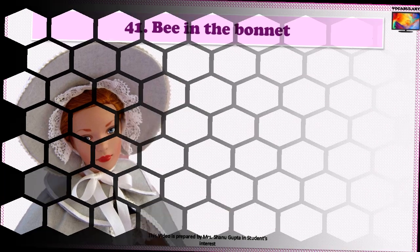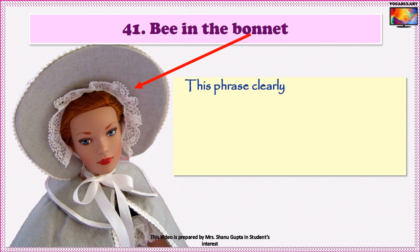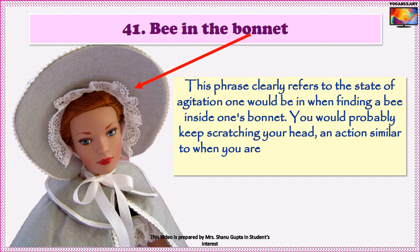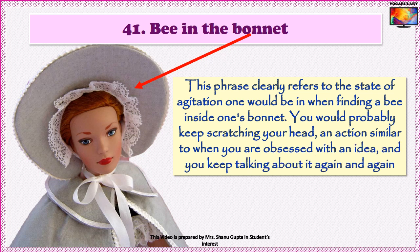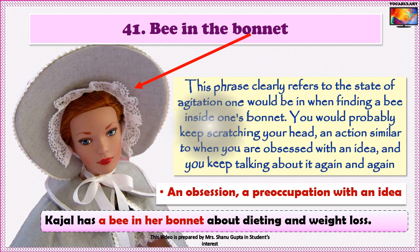Idiom number 41 is A bee in the bonnet. A bonnet means a hat tied to your chin. This idiom clearly refers to the state of agitation one would be in when finding a bee inside one's bonnet — you would probably keep scratching your head — an action similar to when you are obsessed with an idea and keep talking about it again and again. For instance: Kajal has a bee in her bonnet about dieting and weight loss.